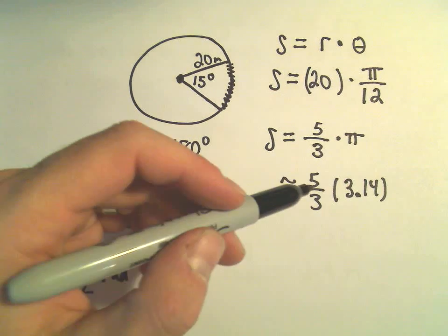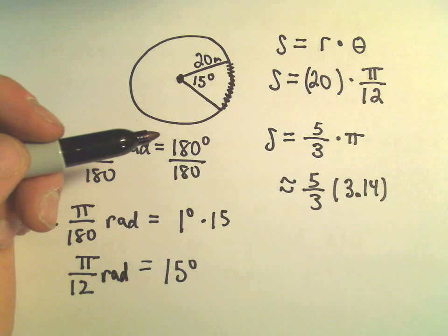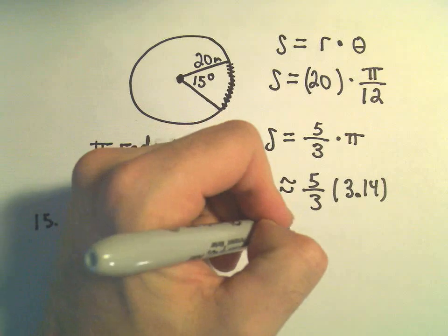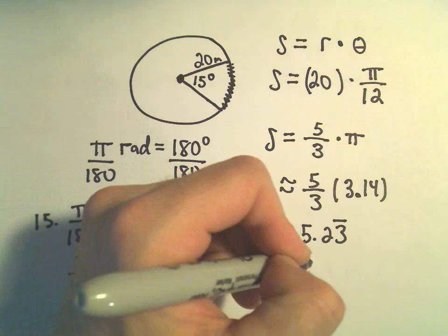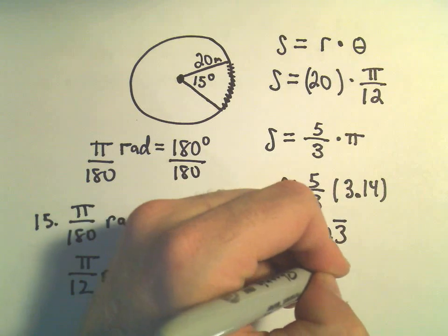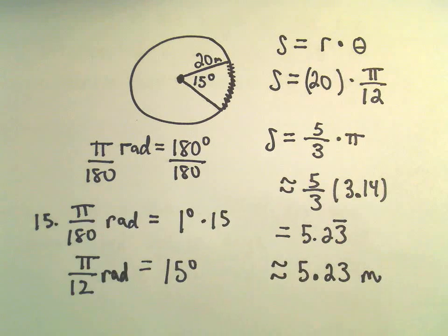So let's see, if we multiply that by 5 thirds, I am getting that this equals 5.23 repeating, so I would say the arc length is roughly equal to 5.23 meters.